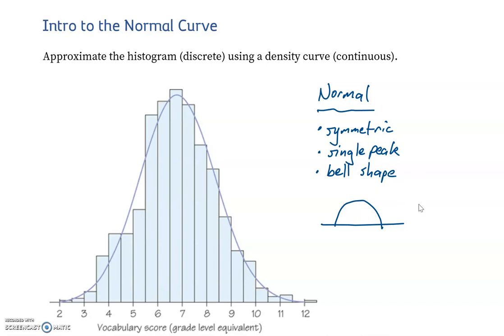You could have things symmetric that have more than one peak, and of course that wouldn't be bell-shaped. So we need all three of those things in order to be considered a normal curve.